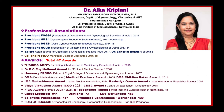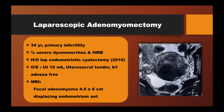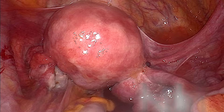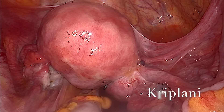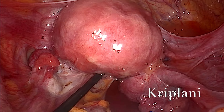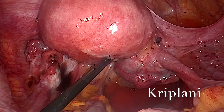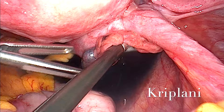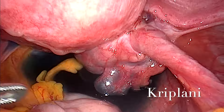In this video, we are showing the procedure of laparoscopic adenomyomectomy. This young girl wanted to have a baby, had already had a laparoscopy for endometriotic cystectomy. On laparoscopy and MRI, a posterior wall 4-5 cm adenomyoma was identified.